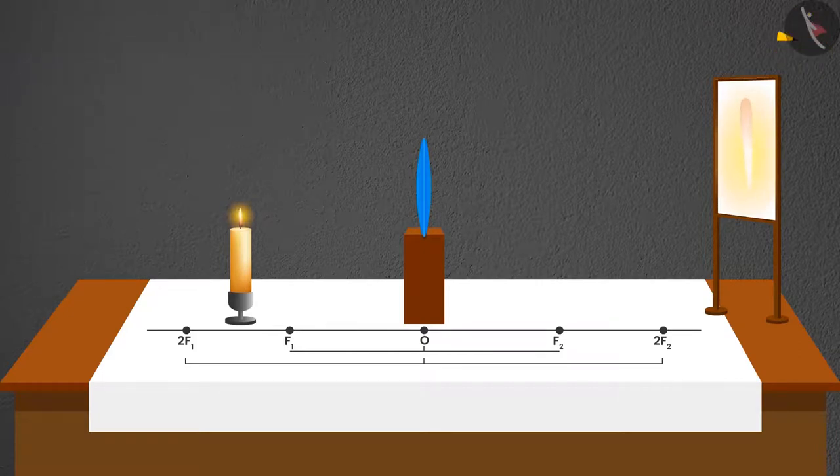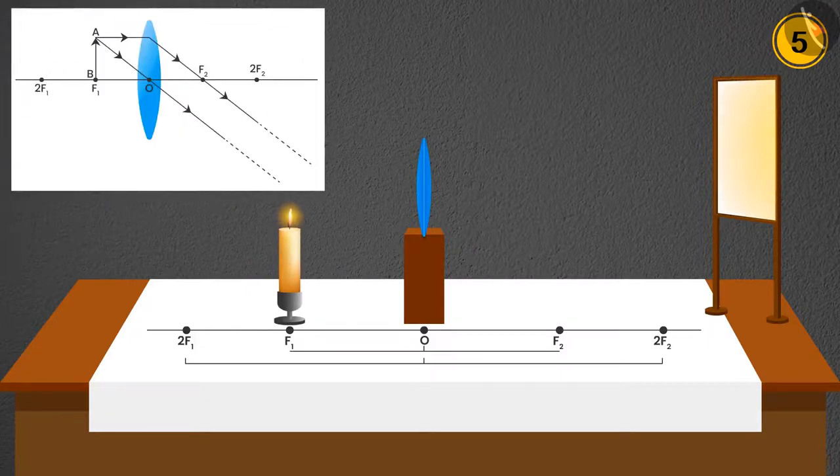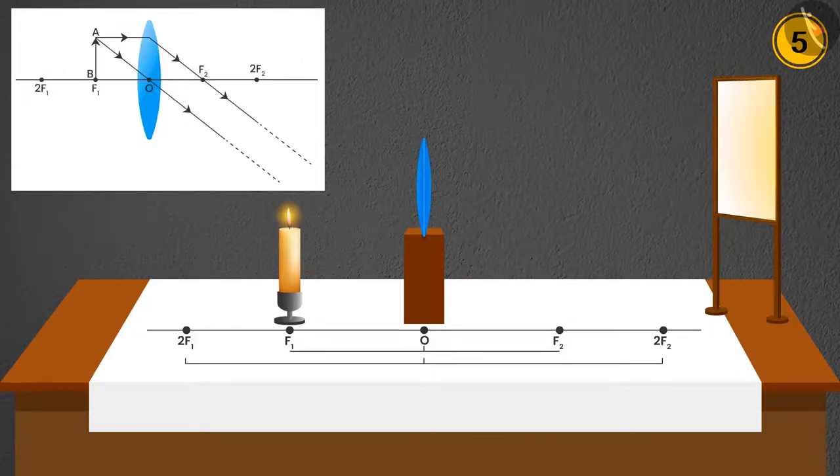Case 5: If the candle is placed at F1, then the image will be seen to form at infinity. The size of the image will be highly enlarged and the nature will be real and inverted.